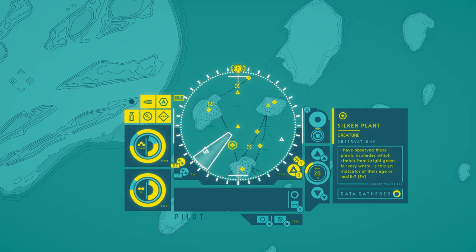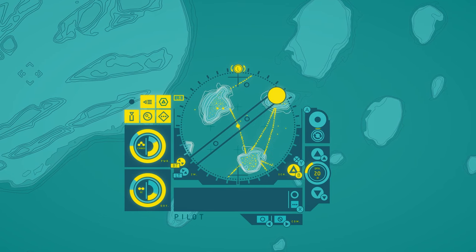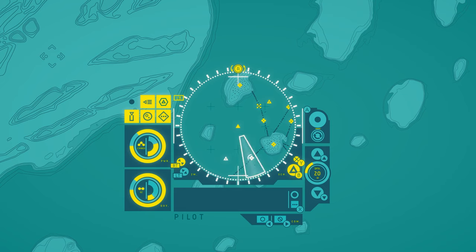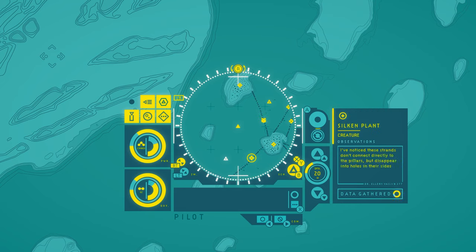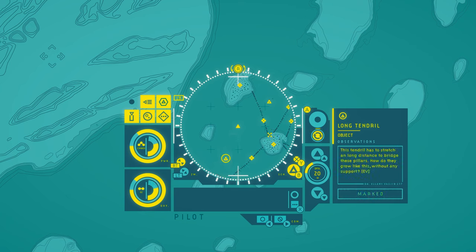Tendril maze. Empty pillar. The tendrils seem to be avoiding this pillar. In fact, they appear to be avoiding the main shelf of the reef altogether. I've noticed these strands don't connect directly to the pillars, but disappear into holes in their sides. What are they connected to then? Long tendril. This tendril has to stretch a long distance to bridge these pillars. How do they grow like this without any support?